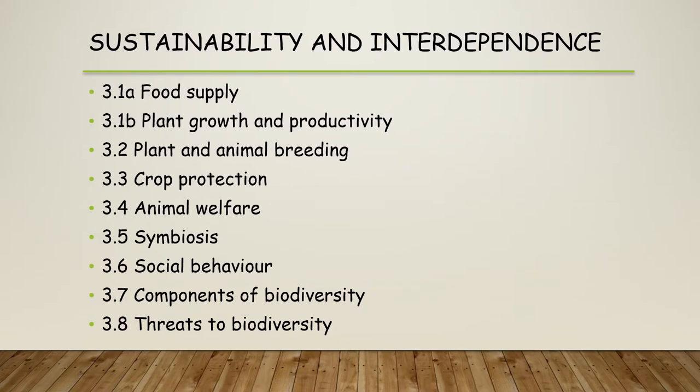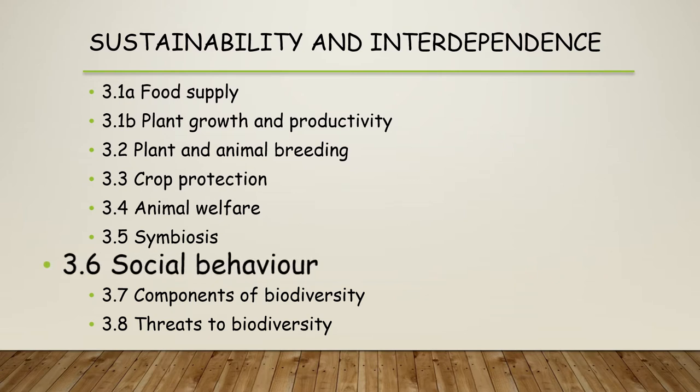We're coming towards the end of unit 3 and therefore the end of the course. Key area 3.6, social behaviour, follows naturally from our previous discussions of symbiosis and animal welfare, because we're talking about how animals interact with each other. Understanding their natural interactions helps us understand when things are going wrong, and also feeds into previous discussions about food security.